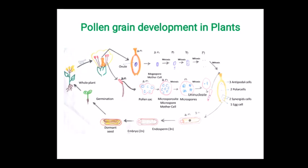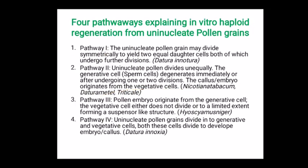We have to make sure we collect immature anthers filled with uninucleate microspores. This is the microspore stage we use for anther culture. Generally four pathways explain in vitro haploid regeneration from uninucleate pollen grains. In pathway one, the uninucleate pollen grain may divide symmetrically to yield two equal daughter cells, both of which undergo further divisions. This is observed in Datura innoxia.